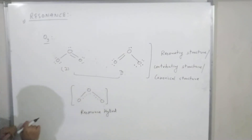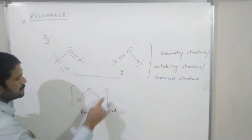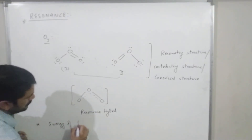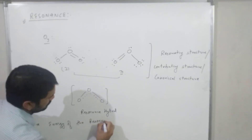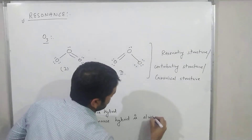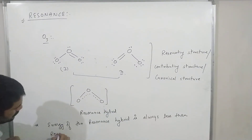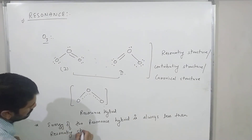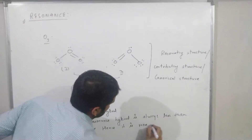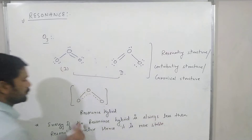Now let's see about the resonance hybrid's energy. The energy of the resonance hybrid is always less than that of the resonating structures. Hence, the resonance hybrid is more stable — when the energy is low in a structure, it is more stable.